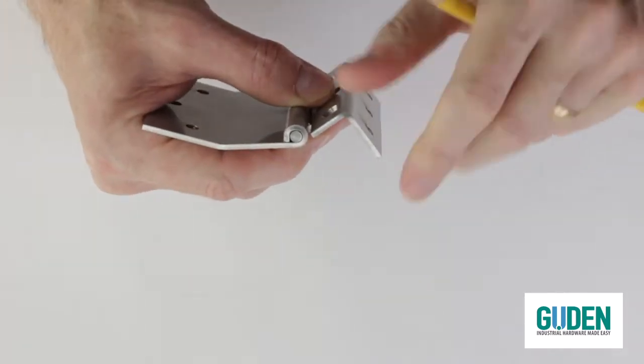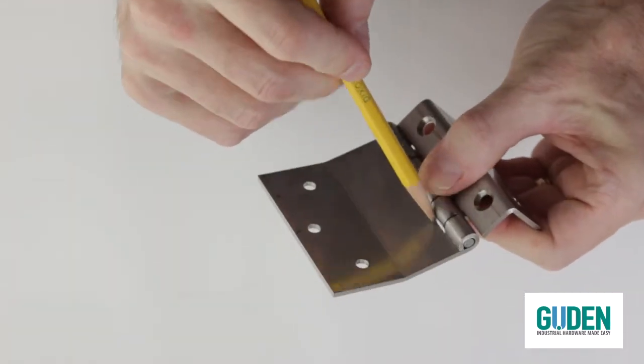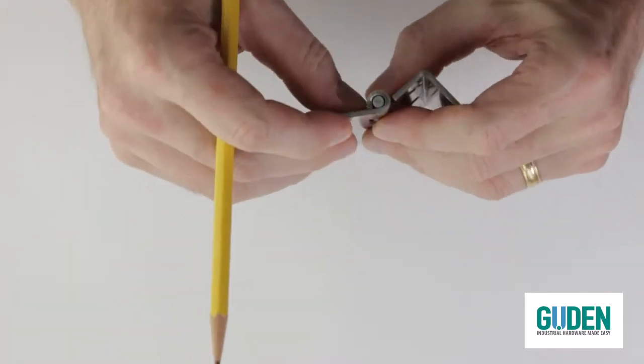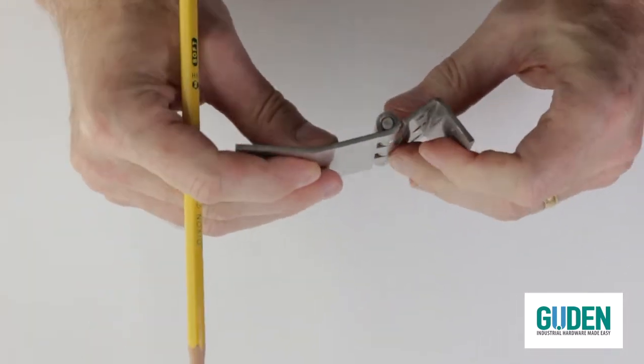Also, you can only make a bend so close to the barrel of the hinge because the bending tool has to be able to get a grip on it. But other than that restriction, Gudin can do bends of almost any kind.